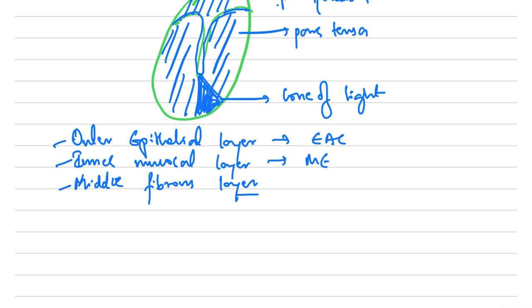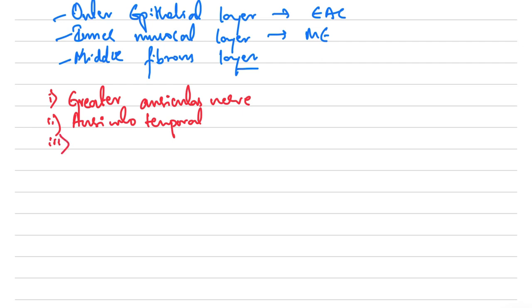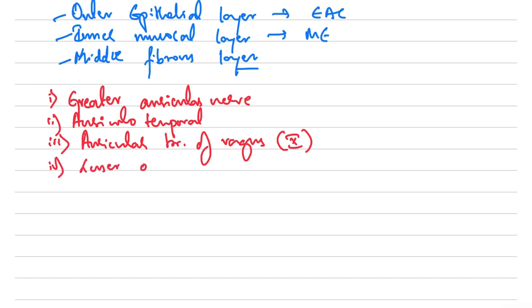The nerve supply of the external ear: it is supplied by the greater auricular nerve, the auriculotemporal nerve, the auricular branch of the vagus — the 10th cranial nerve — and also the lesser occipital nerve, which is C3 (C2 and C3). This is the basic nerve supply of the external ear.